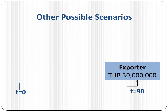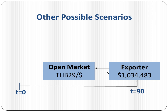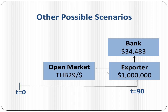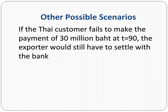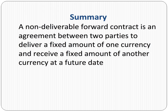Here's the graphical representation. At t equals 90, the exporter receives 30 million baht from the customer. The exporter converts the amount at the spot rate of 29 baht per dollar and receives 1 million 34 thousand four hundred and eighty-three dollars. Since the exporter agreed to receive 1 million dollars from the bank, the exporter pays the bank 34 thousand four hundred and eighty-three dollars. Note that if the Thai customer fails to make the payment of 30 million baht at t equals 90, the exporter would still have to settle with the bank.